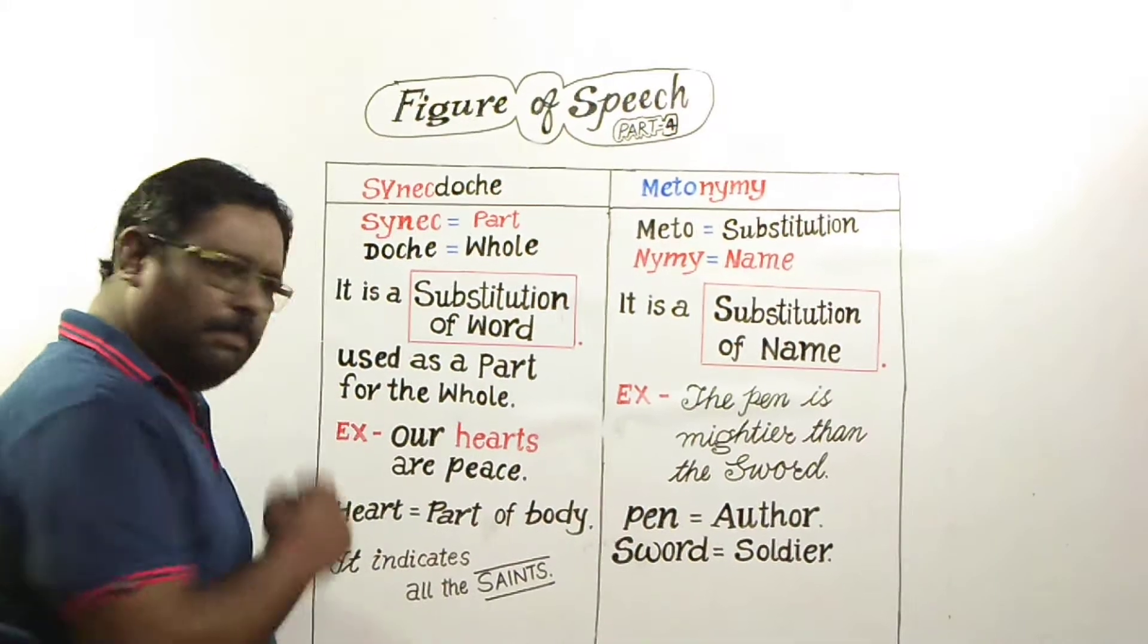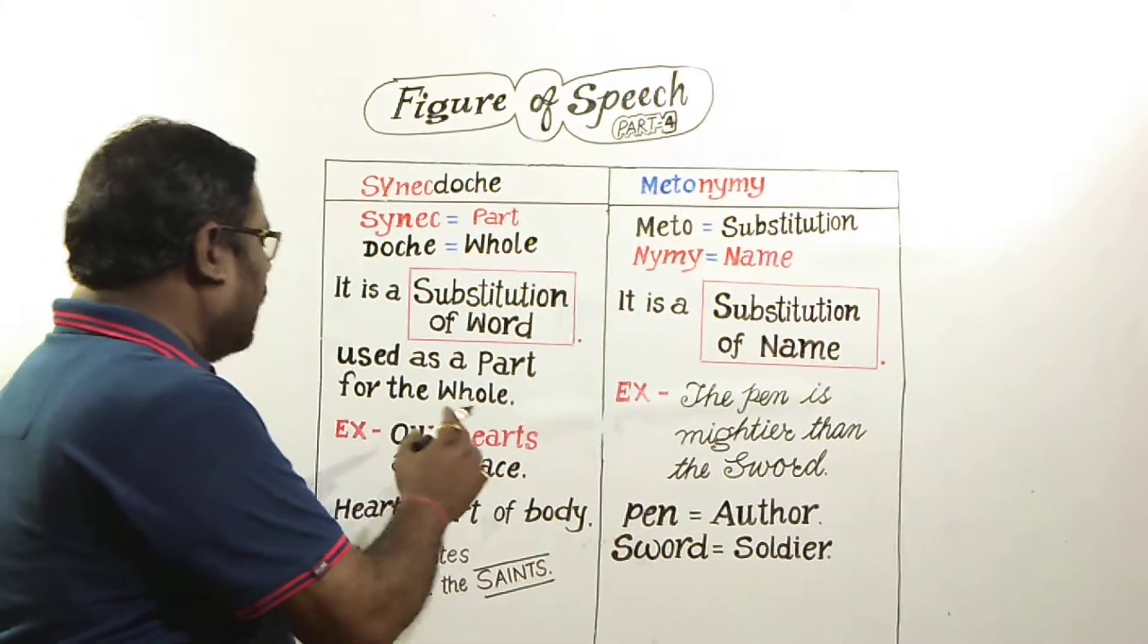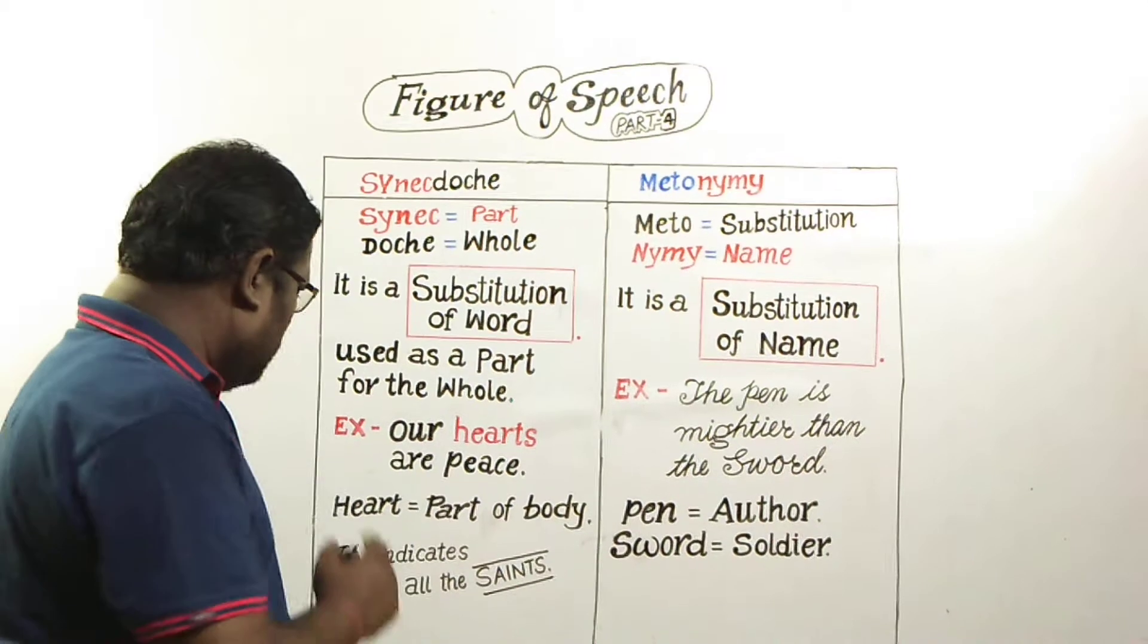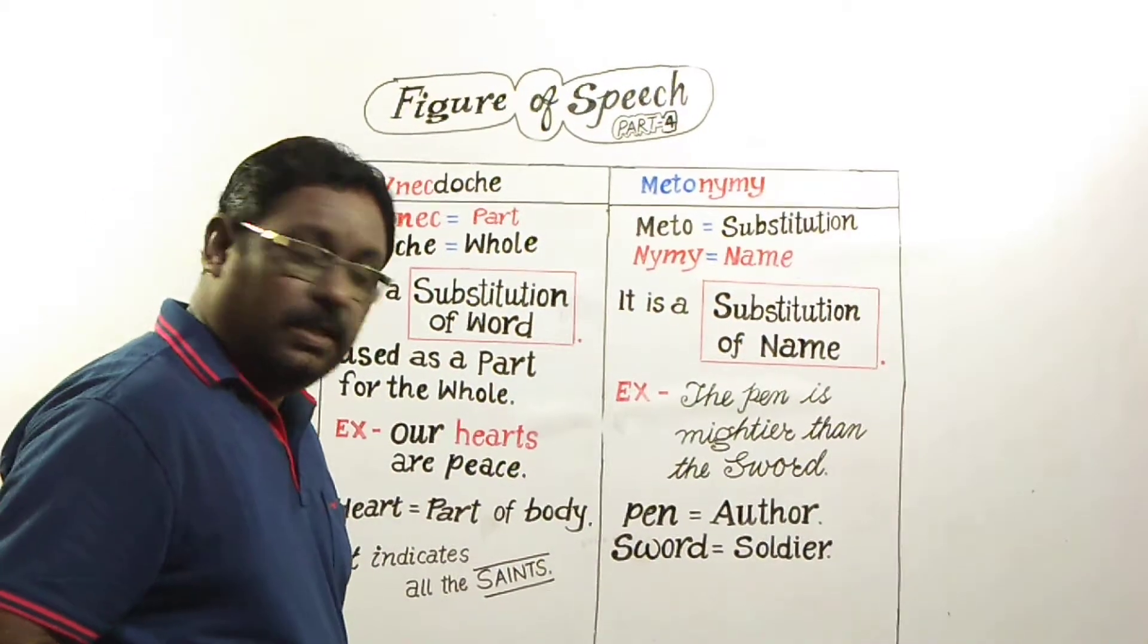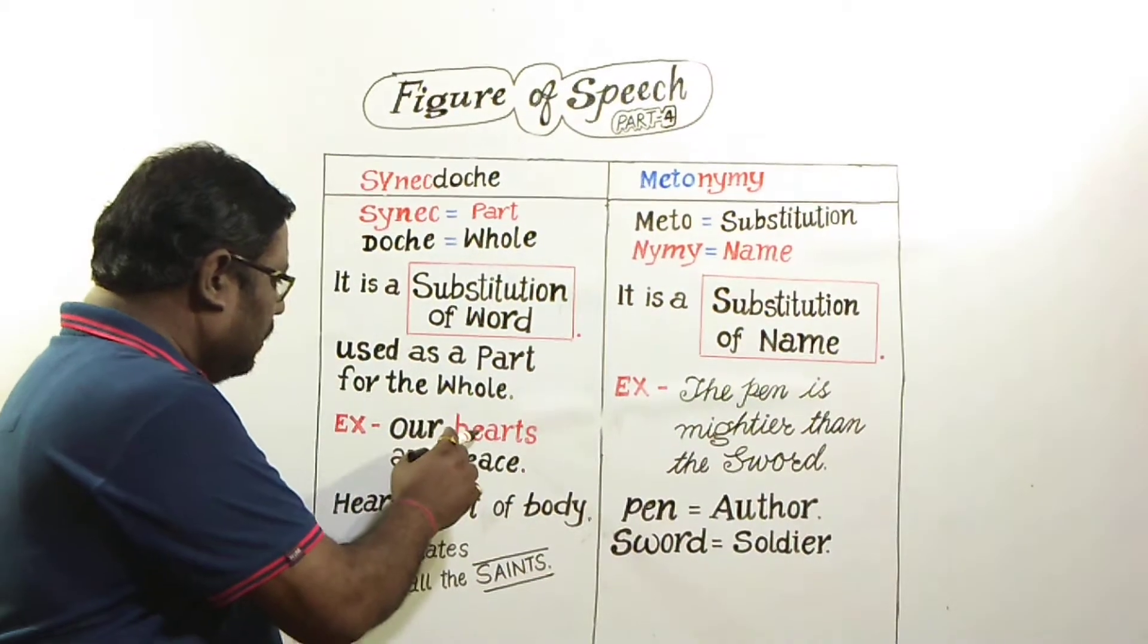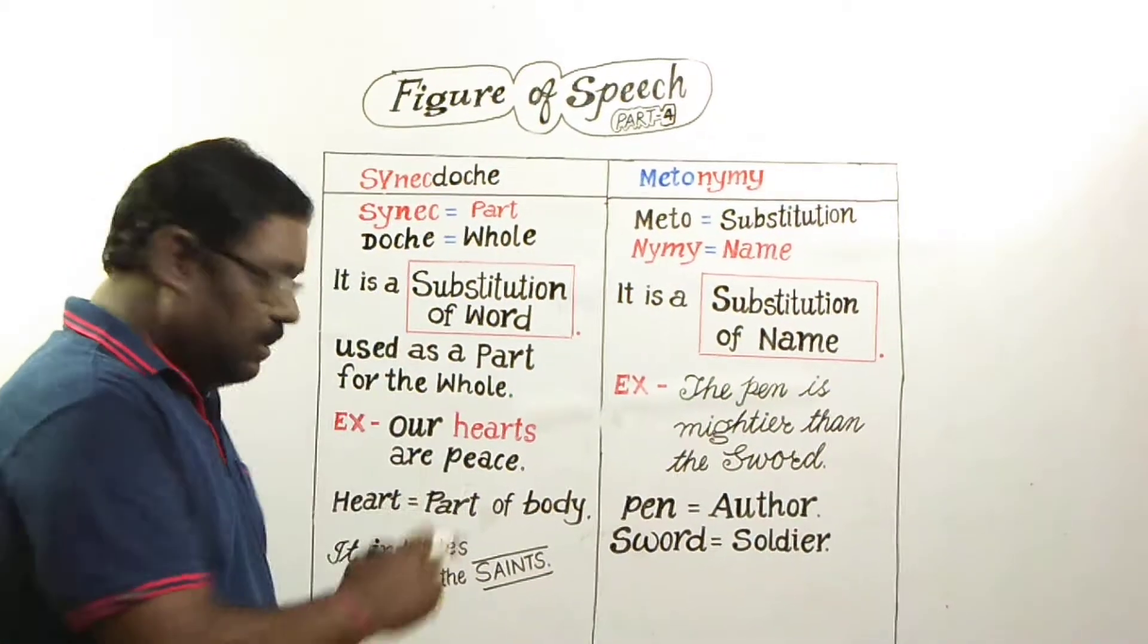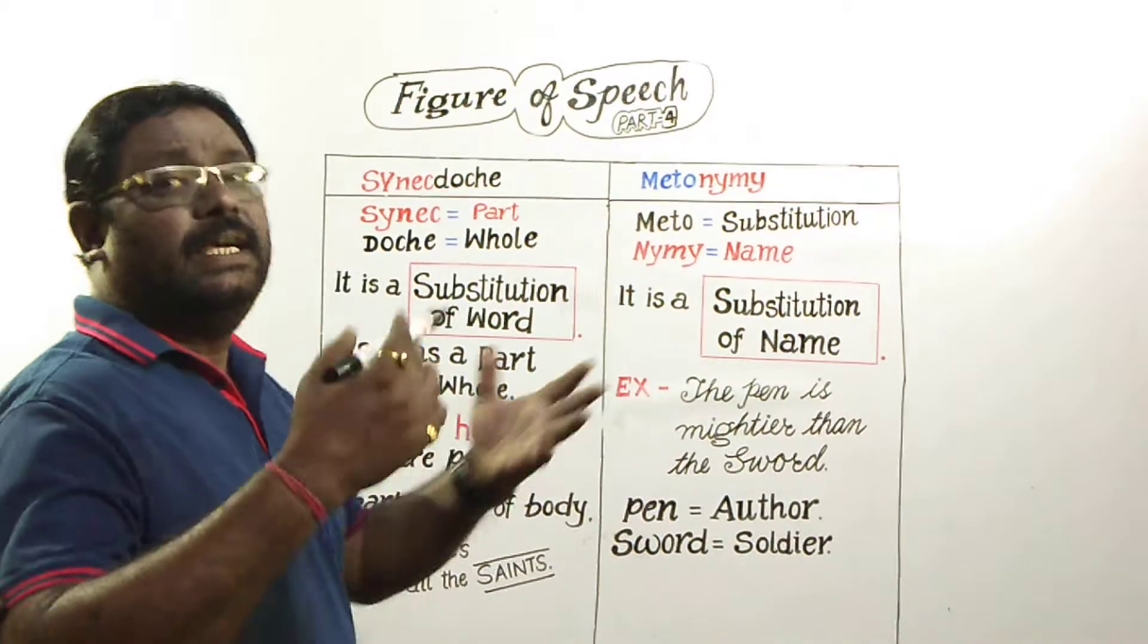For example, our hearts are peace. Here heart means part of body, but here heart indicates all the saints.